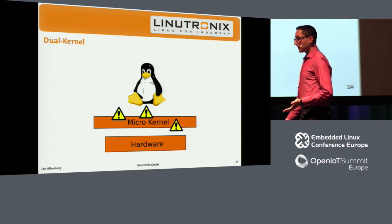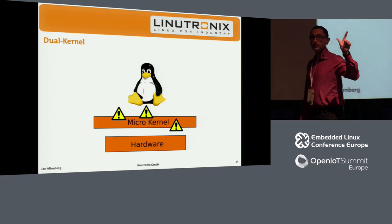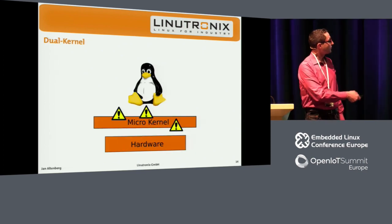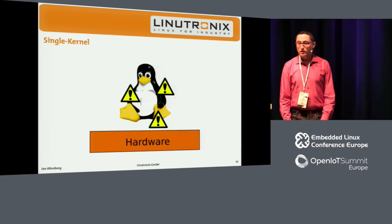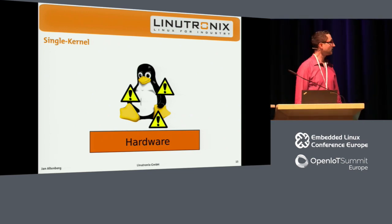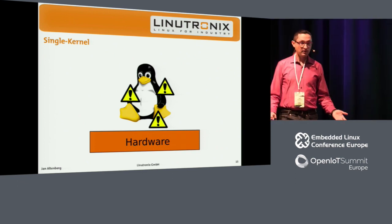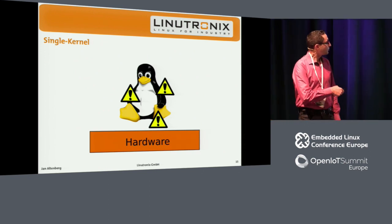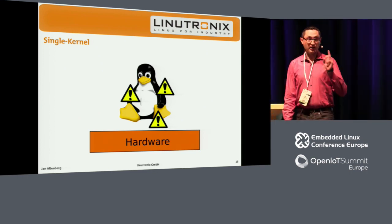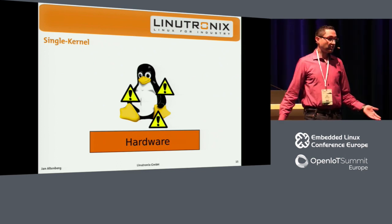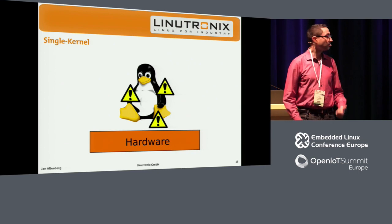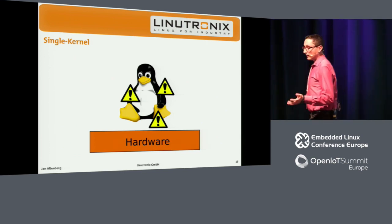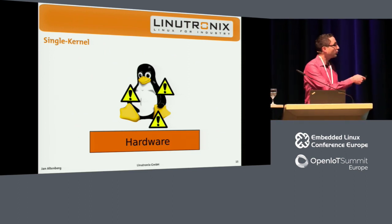These were the first approaches for real-time in Linux, and they're still around. The other idea is to find a way to make Linux itself real-time capable, which looks like a huge task — you'd have to touch every single file in the kernel. But the result is that you have real-time in Linux itself: no micro-kernel to maintain, no hardware abstraction layer, and you can use standard tools. If you had the choice, that would be the way to go.